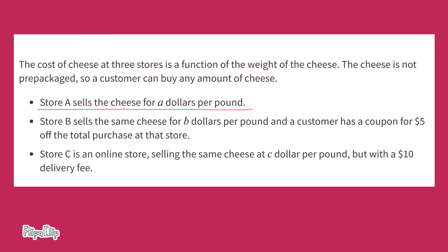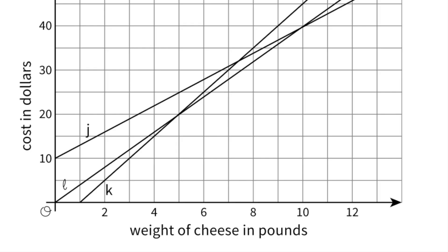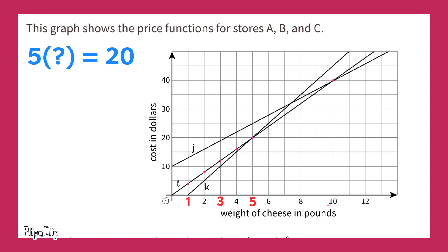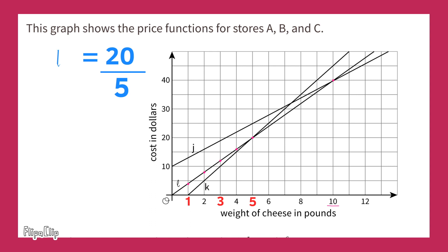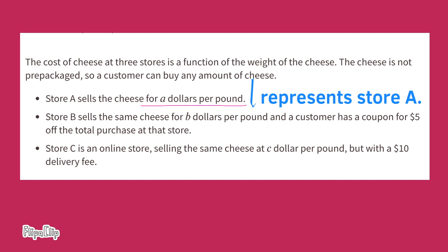That leaves Store A, which sells cheese for A dollars per pound. Looking at line L on the graph, it intersects at five pounds of cheese and twenty dollars. This gives a one-step equation: five times L equals twenty. Dividing both sides by five — five L divided by five is L, and twenty divided by five is four. L equals four. Line L represents Store A, which sells cheese for four dollars per pound.